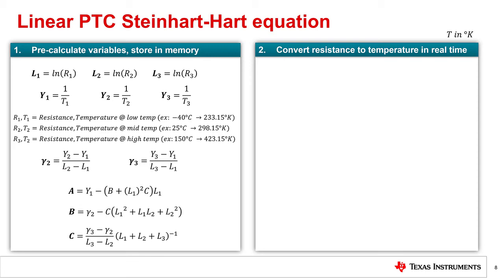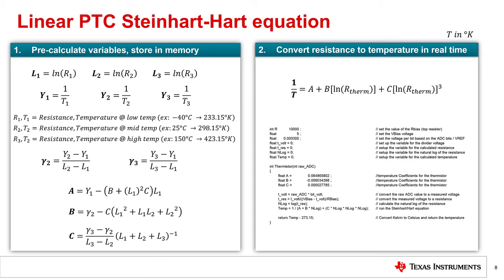During operation, one over the temperature in degrees Kelvin is equal to A plus B times the natural log of the resistance of the thermistor plus C times the natural log of the resistance of the thermistor quantity cubed. Compared to the lookup table method, there is no loop in code that you would have to design, but you still need to go through the steps of calculating the thermistor's resistance value.